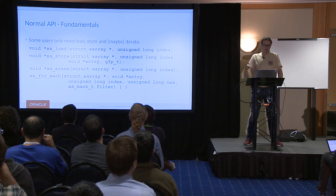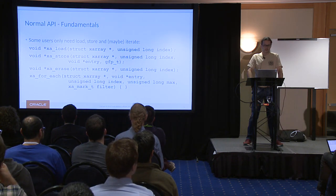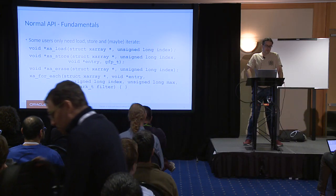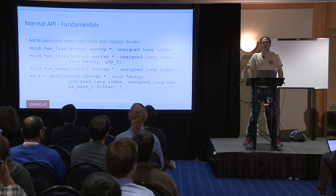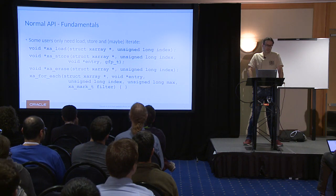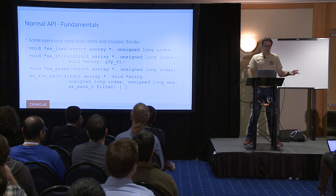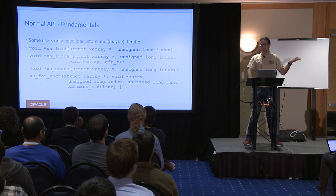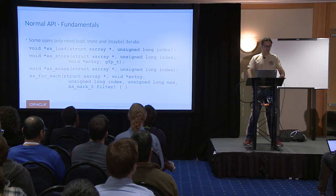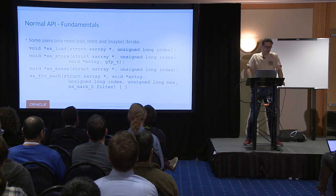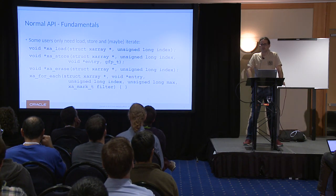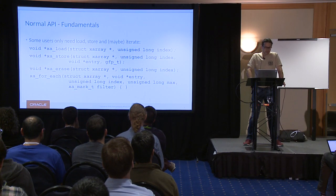There's no difference between storing a null pointer and using the erase call for a normal array — it's just a convenience function. You could pass null as a third argument to xa_store with any GFP flags; it won't use them. Erasing, or storing null in the XArray, does not require allocation. Since this is an infinitely large array, it's somewhat inefficient to count from zero to ULONG_MAX to find all elements.